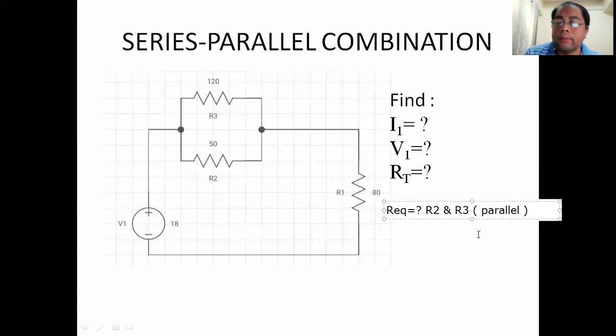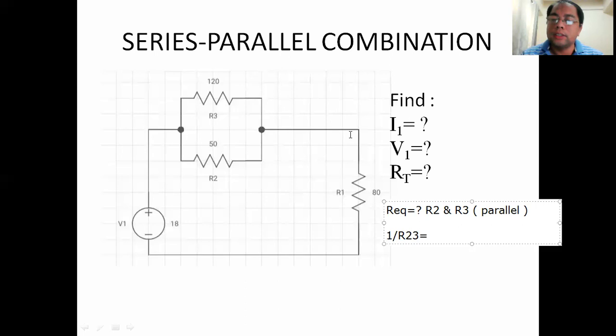Okay, so going to the solution of this number. Again, we start here with R2 and R3 to find their combined value. Their combined value will use the concept of parallel connection.